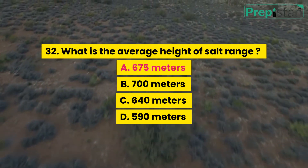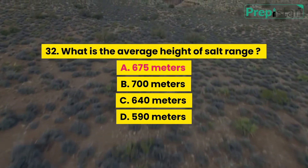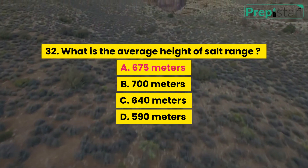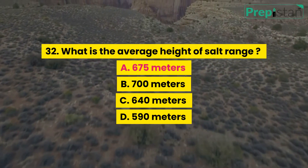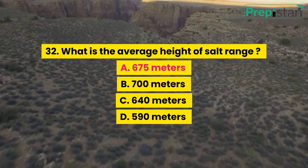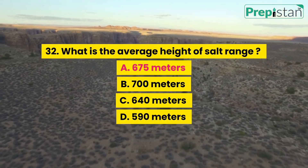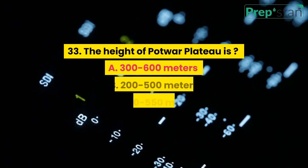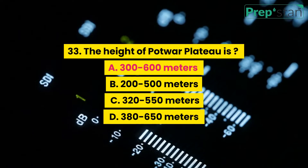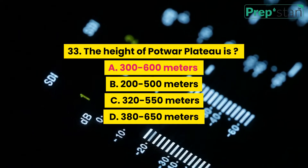Question 32: What is the average height of salt range? A. 675 meters, B. 700 meters, C. 640 meters, D. 590 meters.